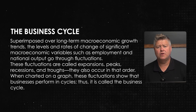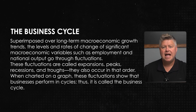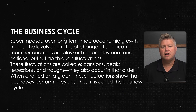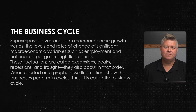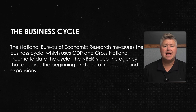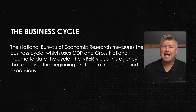Superimposed over long-term macroeconomic growth trends, the levels and rates of change of significant macroeconomic variables — such as employment and national output — go through fluctuations called expansions, peaks, recessions, and troughs, occurring in that order when charted on a graph. These fluctuations show that businesses perform in cycles, hence the term business cycle. The National Bureau of Economic Research measures the business cycle using GDP and gross national income to date the cycle. The NBER is also the agency that officially declares the beginning and end of recessions and expansions — something illustrated recently when the president tried to change the definition of recession.